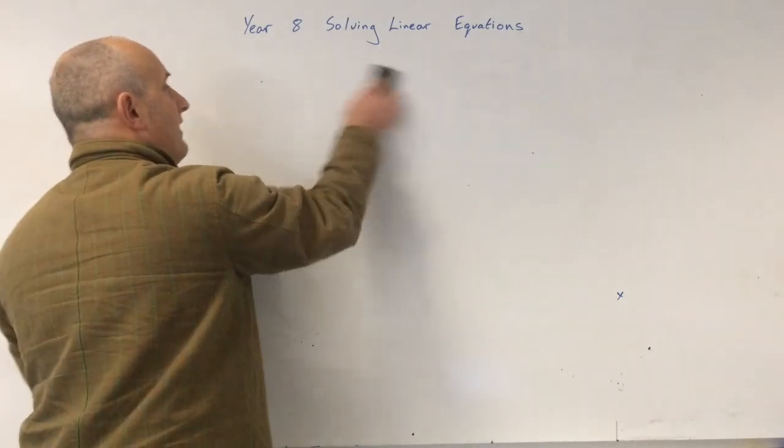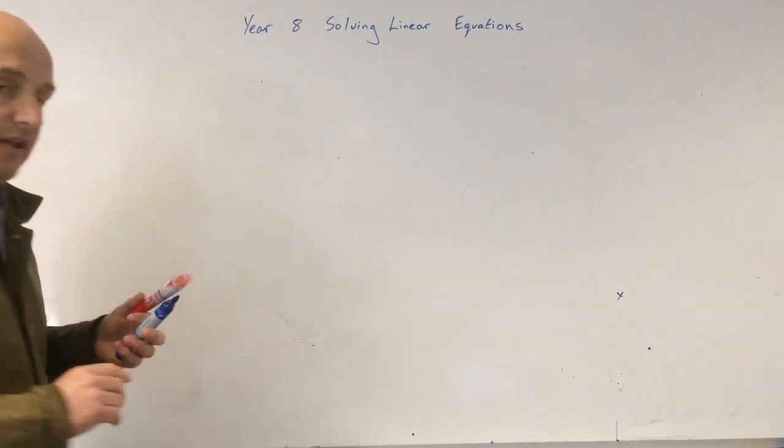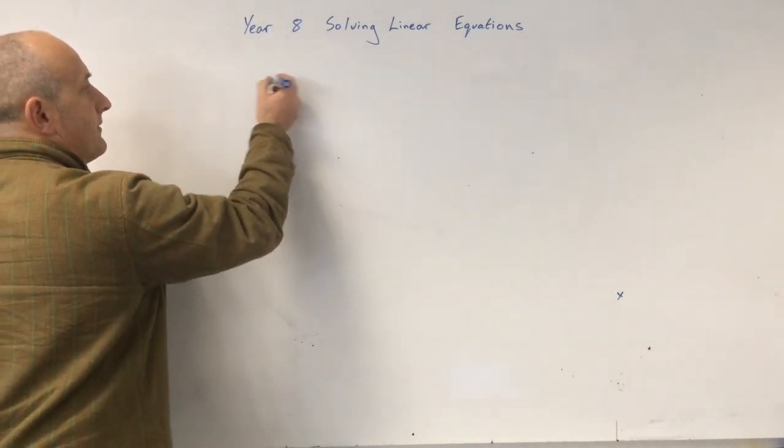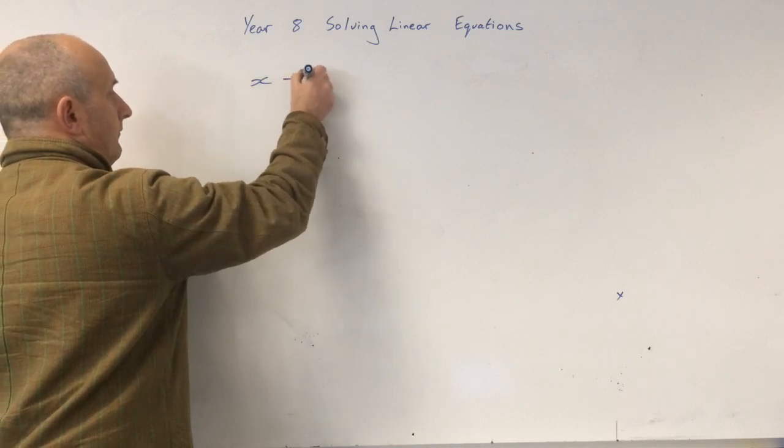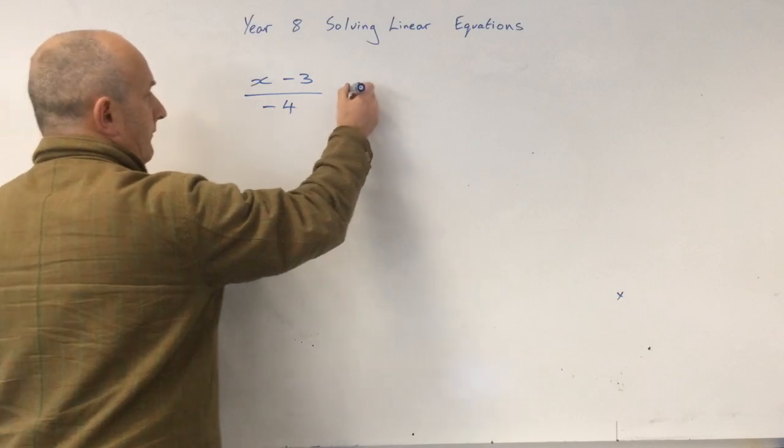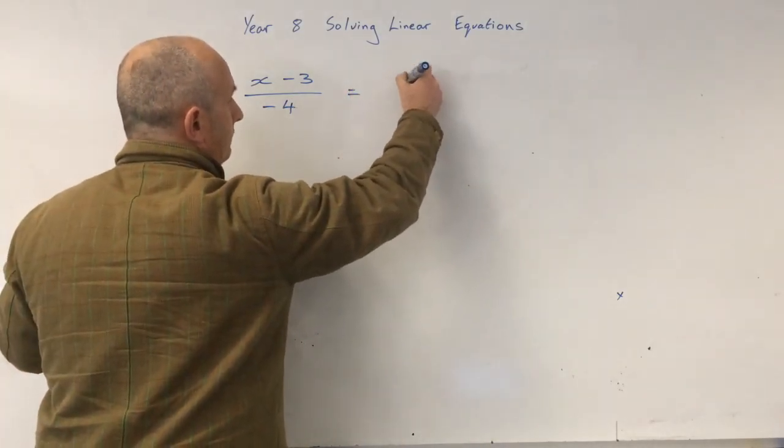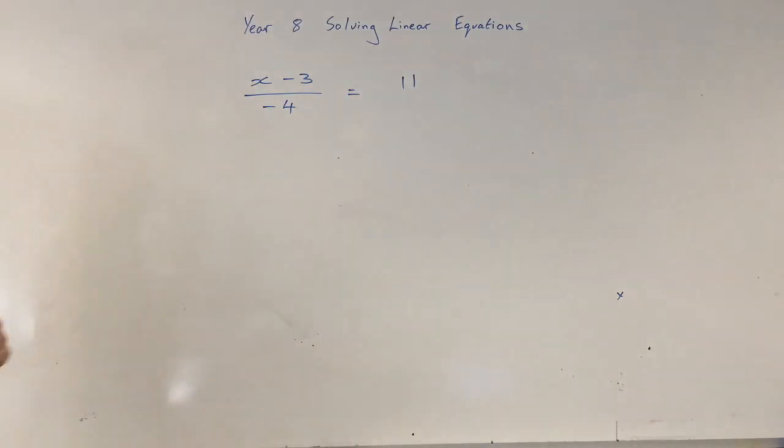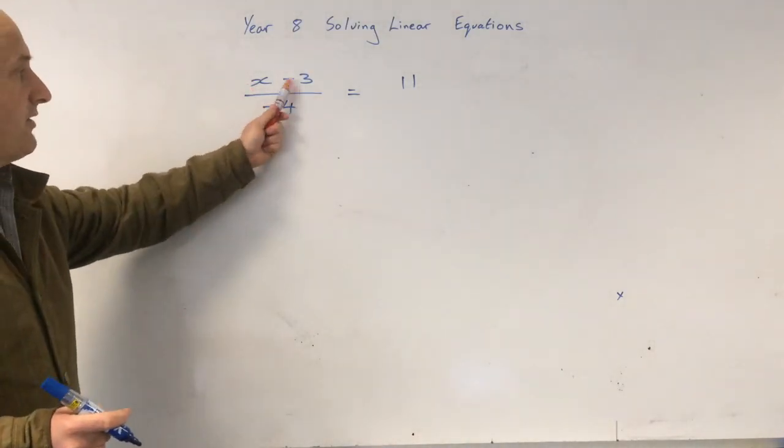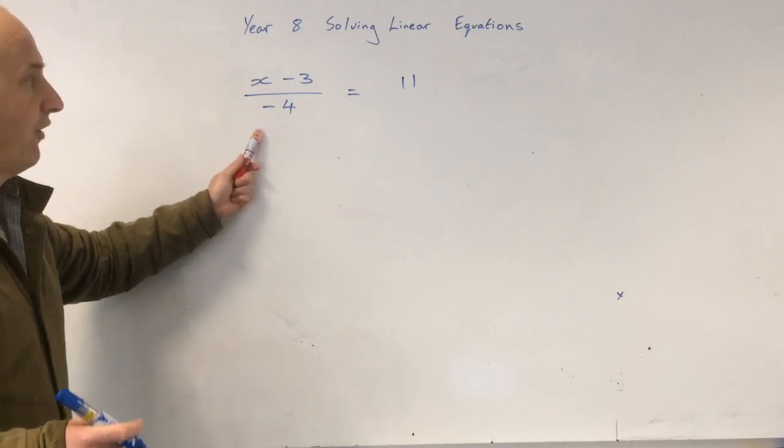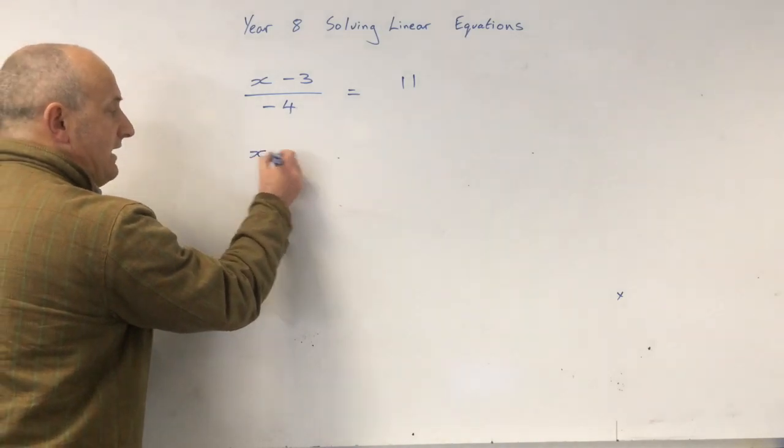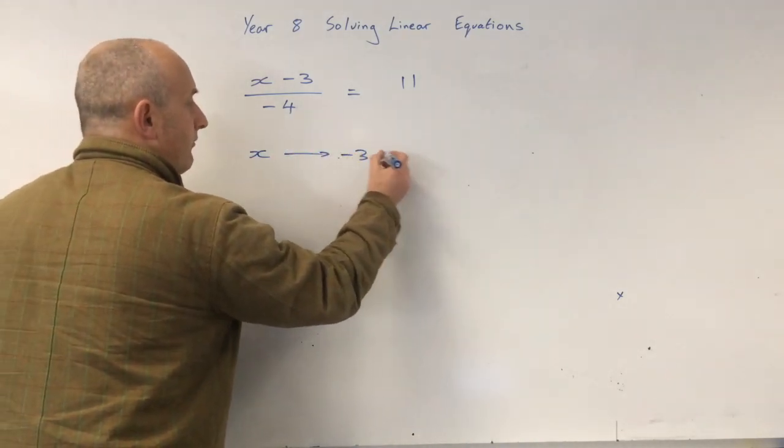One of the only things that we have to be very careful with is we might include some directed numbers. So let's just have a look at something like this. Okay. So now let's do this. x minus 3 divided by negative 4 equals 11.